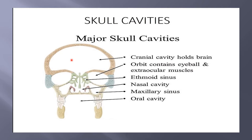You can see the skull cavities labeled: the cranial cavity holds the brain, orbital cavity holds the eye, nasal cavity, and the oral cavity. Here the paranasal sinuses are present — the maxillary sinus, ethmoid sinus, and frontal sinus.